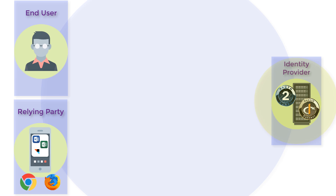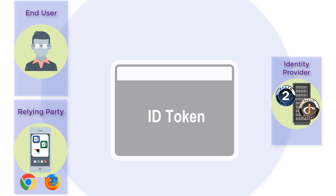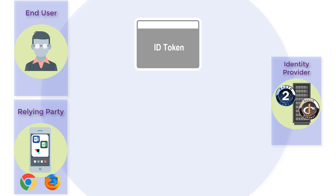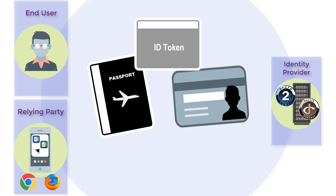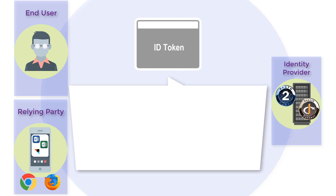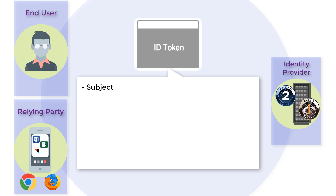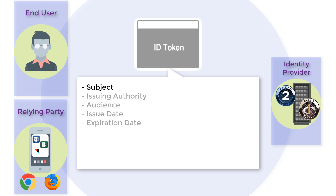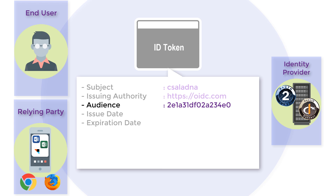The identity provider provides the relying party information about the identity of the end user through an identity token. The identity token is similar to an ID card or passport. It contains required attributes or claims about the end user and how they were authenticated. These claims are: subject, issuing authority, audience, issue date, and expiration date. The subject is a unique identifier assigned to a user by the identity provider, for example a username. The issuing authority is the identity provider that issued the token. The audience identifies the relying party who can use this token. The issuing and expiration date is the date and time the token was issued and will expire.